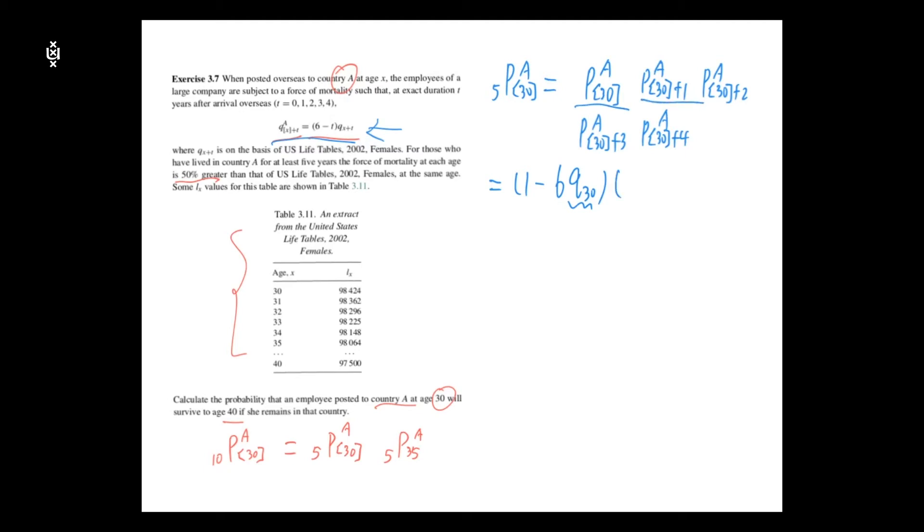for the second term, we can use t equals to zero, so it is 1 subtract 5, q, 31, and here are the other terms.